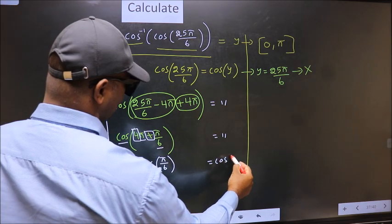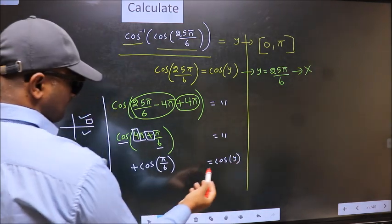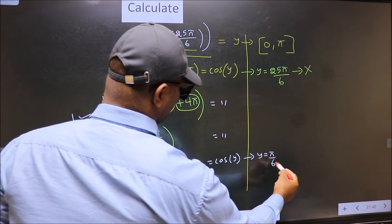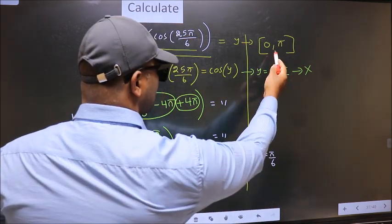Equal to cos y. Comparing both sides we get y to be pi by 6. Does this lie in this interval? Yes.